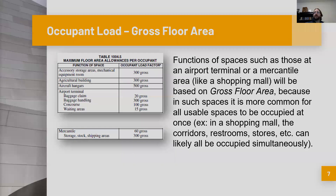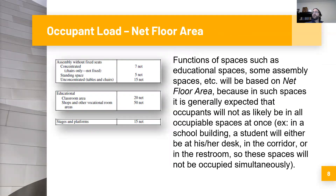Now let's take an example contrary to that — something like an assembly space without fixed seats, or educational spaces. Those are going to be based on net floor area, because in such spaces it is generally expected that occupants will not likely be in all occupiable spaces at once. For example, in a school building, a student will likely either be at their desk, in the corridor, or in the restroom — but not all at once. So these spaces will not be occupied simultaneously.